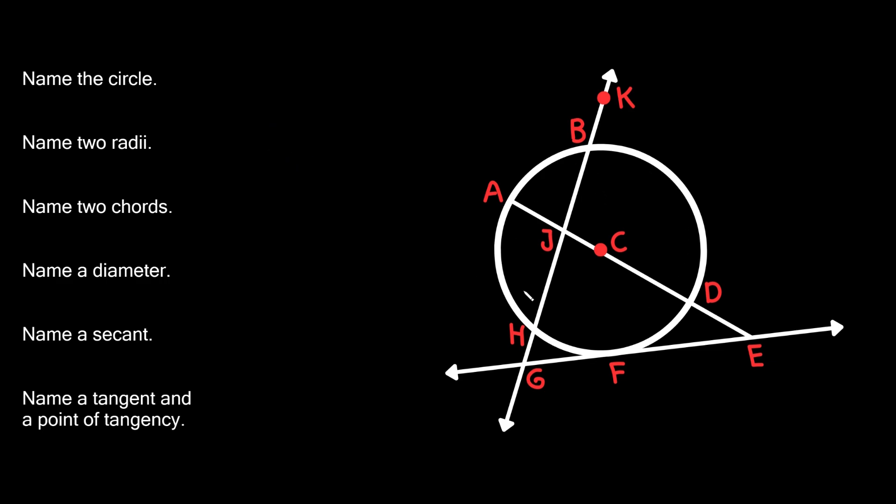So here you can see we have this circle over here and we got this line going through it, we got this other line here, and this line down here. Bunch of stuff going on. So we're gonna answer these questions to get a better idea of what each of these things are.